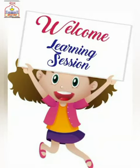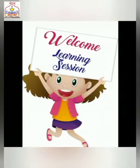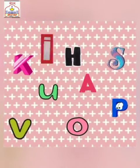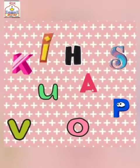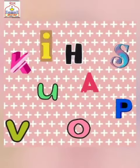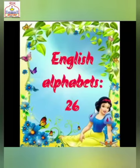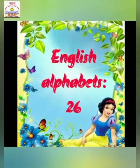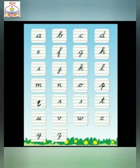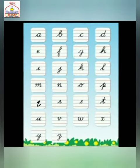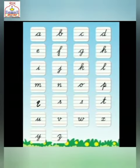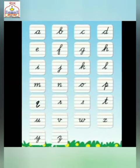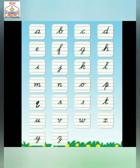Welcome, everyone, to today's learning session! See, the alphabets are dancing! Do you know English alphabets have 26 letters? And they are A, B, C, D, E, F, G, H, I, J, K, L, M, N, O...